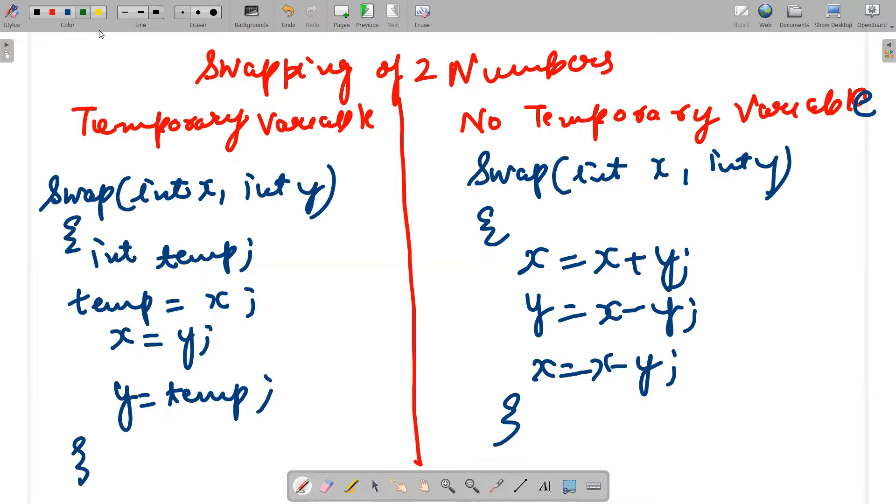Now why I took this example? Because space and time complexity constraints are there in both of them. If I take the size of integer as a universal integer variable, if I just take, because size of a width of a variable depends upon compiler, but I'm taking size of integer as two.